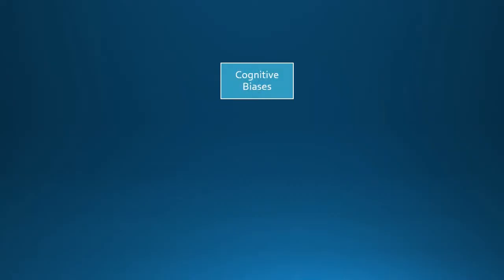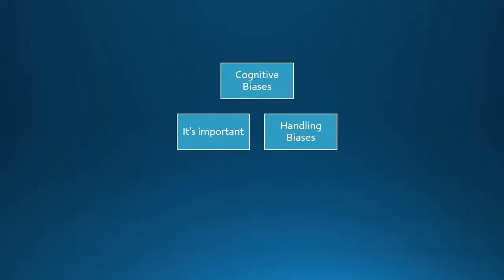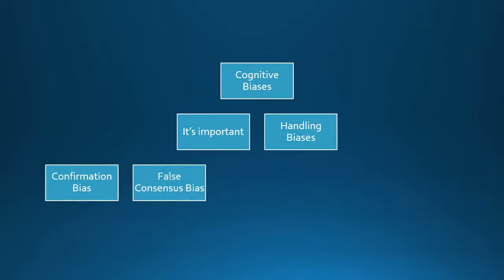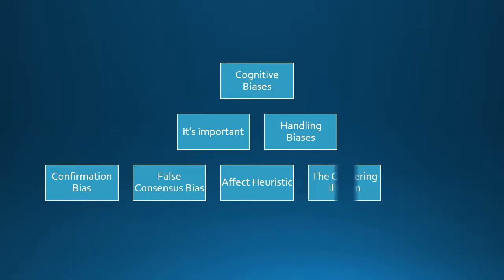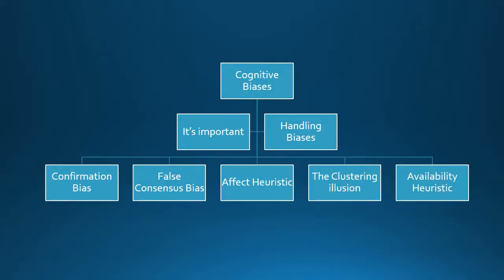In this video, we'll be exploring what cognitive biases are, why it is important to spot them, and how to handle them. We'll also be discussing five common cognitive biases: confirmation bias, false consensus bias, affect heuristic bias, the clustering illusion, and the availability heuristic. Let's get started.